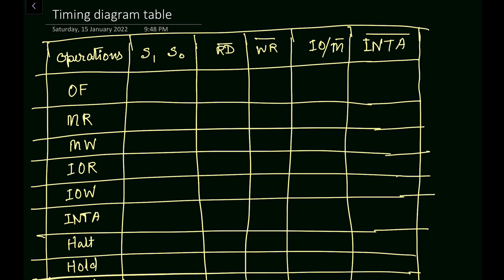Next is the IO/M bar signal. M bar is an active low signal while IO is an active high signal. When this signal is high it will be an input/output read or write operation, and when the signal is low it will be a memory write or memory read operation — meaning memory will be interfaced with the microprocessor.